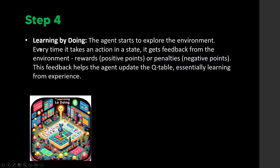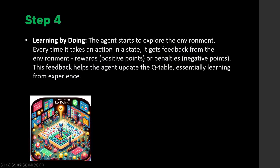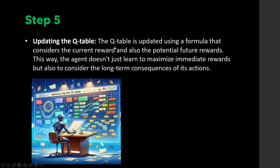Step four is learning by doing. The agent starts exploring the environment, and every time it takes an action it gets feedback — rewards for positive outcomes and penalties for negative ones. This feedback loop helps the agent update the Q-table, essentially learning from experience.